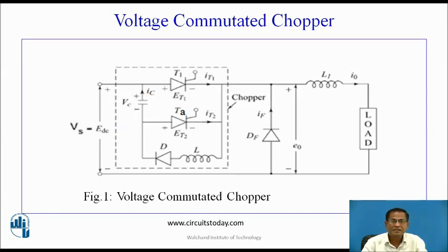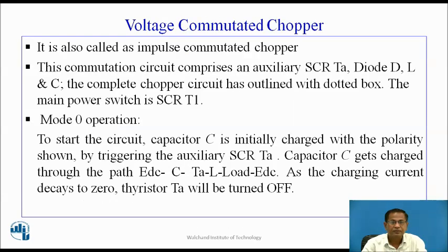This is the basic circuit arrangement for the voltage commutator chopper. Here, T1 acts as the main power device. TA acts as the auxiliary thyristor. L, D, and C act as commutating components. The voltage commutator chopper is also called the impulse commutator chopper. This commutation circuit comprises an auxiliary SCR TA, diode D, L, and C. The complete chopper circuit is outlined with a dotted box. The main power switch is SCR T1, whereas TA is the auxiliary thyristor, used to turn off the main power device.